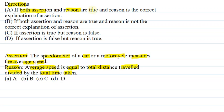If both assertion and reason are true and reason is the correct explanation of assertion. B. If both assertion and reason are true and reason is not the correct explanation of assertion.